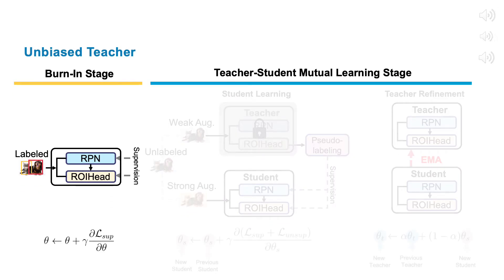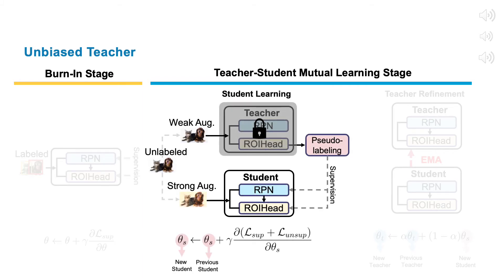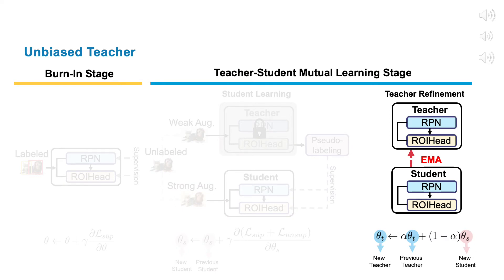In the burn-in stage, we simply train the object detector using the available labeled data to initialize the detector. In the student learning stage, the teacher takes the unlabeled image as input and generates corresponding pseudo-labels for training the student. In the teacher refinement stage, in order to obtain more stable pseudo-labels, we apply exponential moving average to gradually update the teacher model.